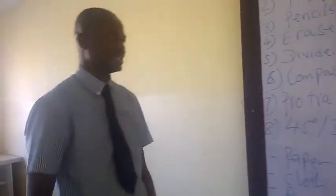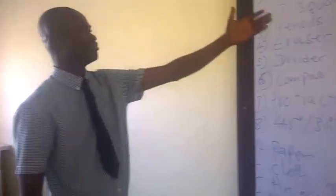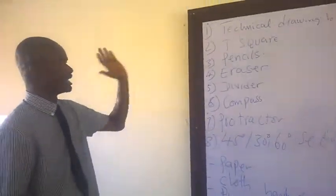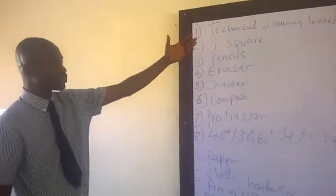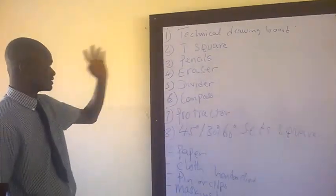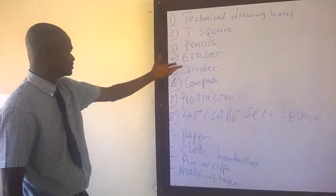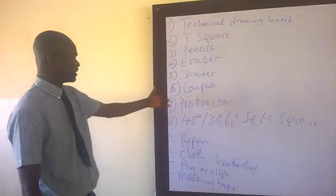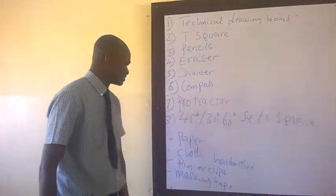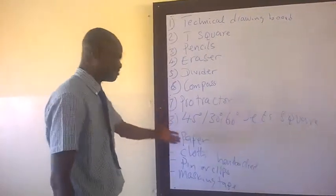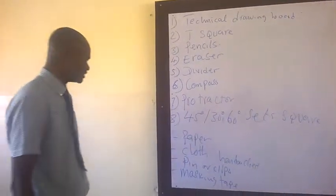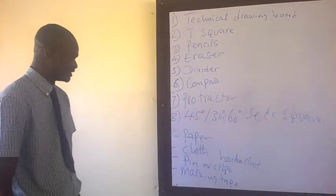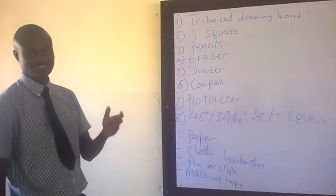Now, these are basically what you use in technical drawing. The drawing board which the drawings are done on it, the T-square used in conjunction with the technical drawing board, the pencils which are used in drawing, eraser to erase mistakes, divider, compass, protractor, 45 degrees set square, and so on. The paper which you use to draw on it, the cloth and the handkerchief, the pins or clips, and masking tape.